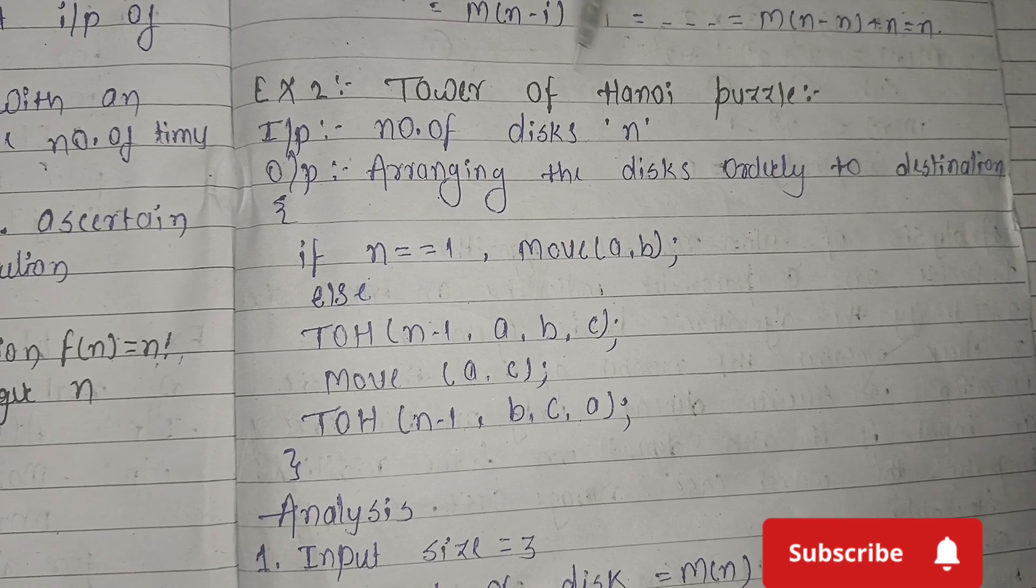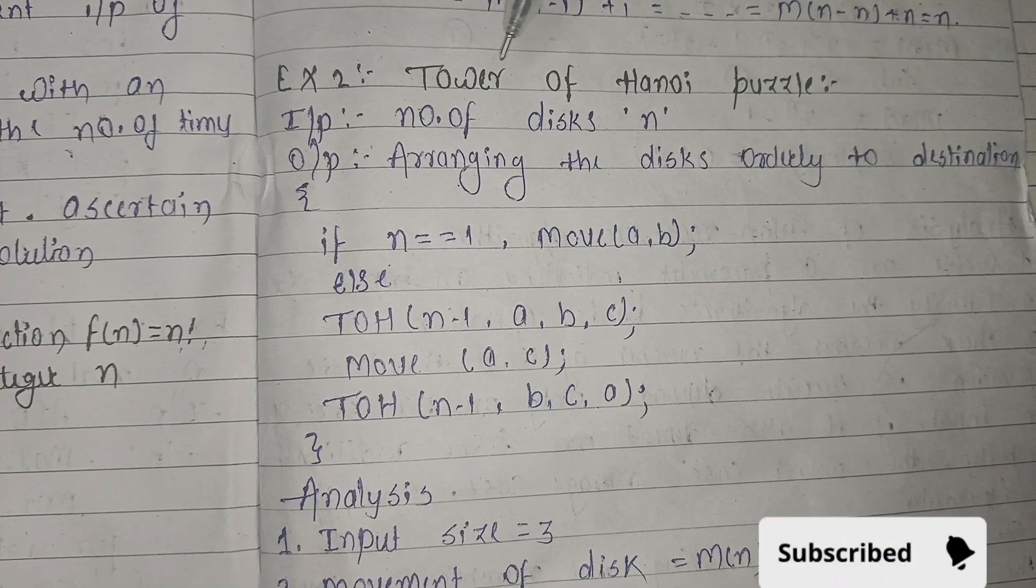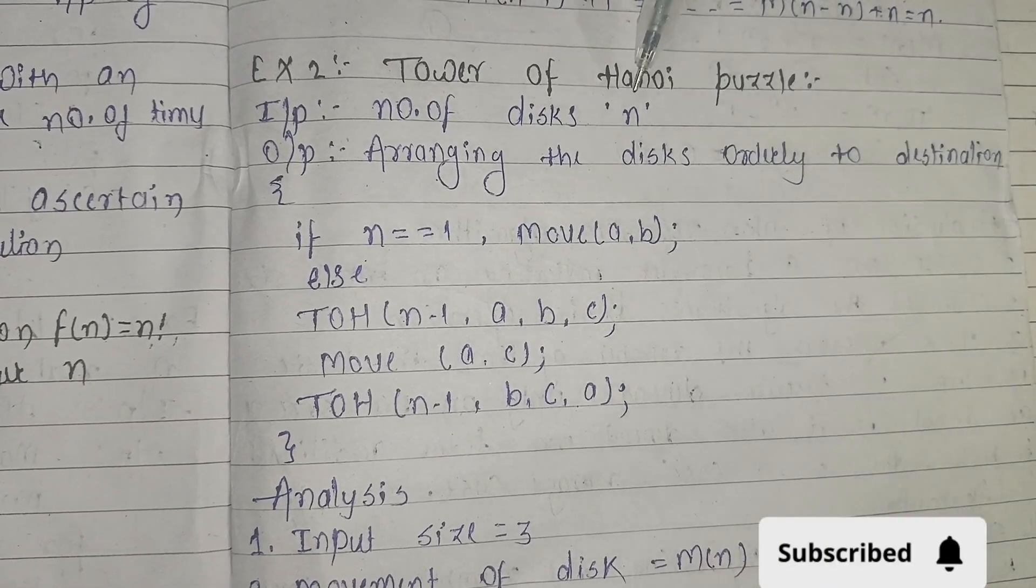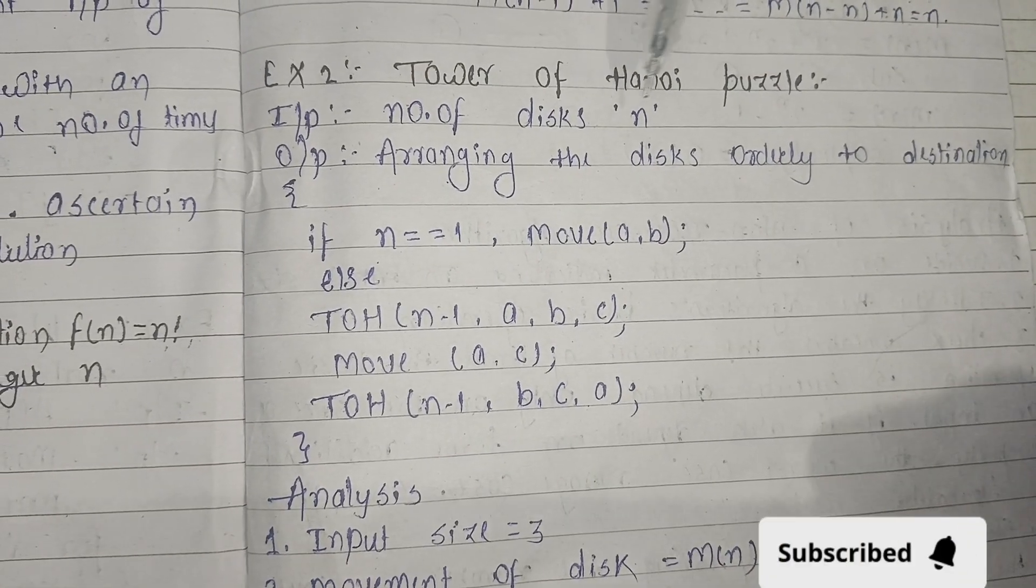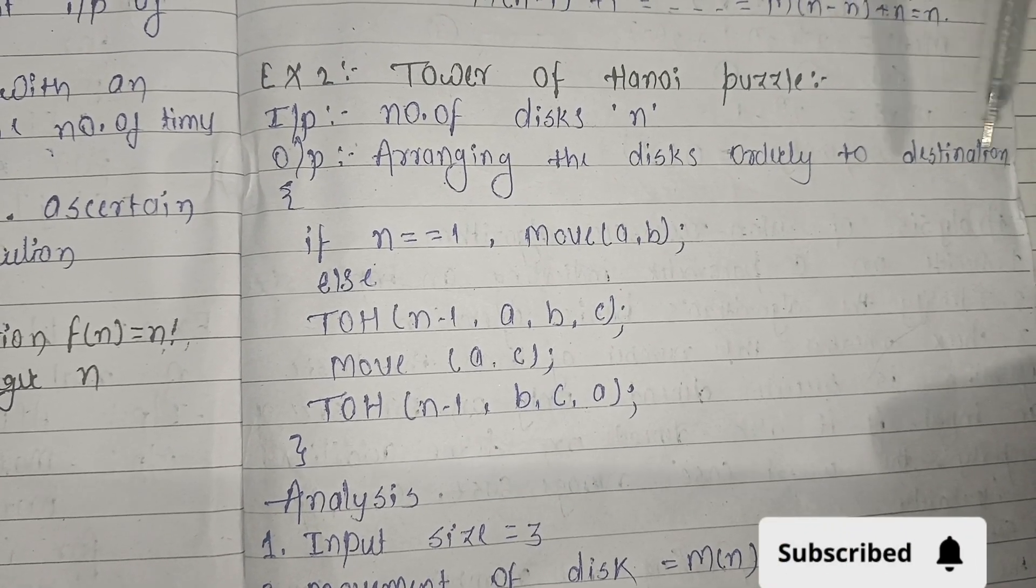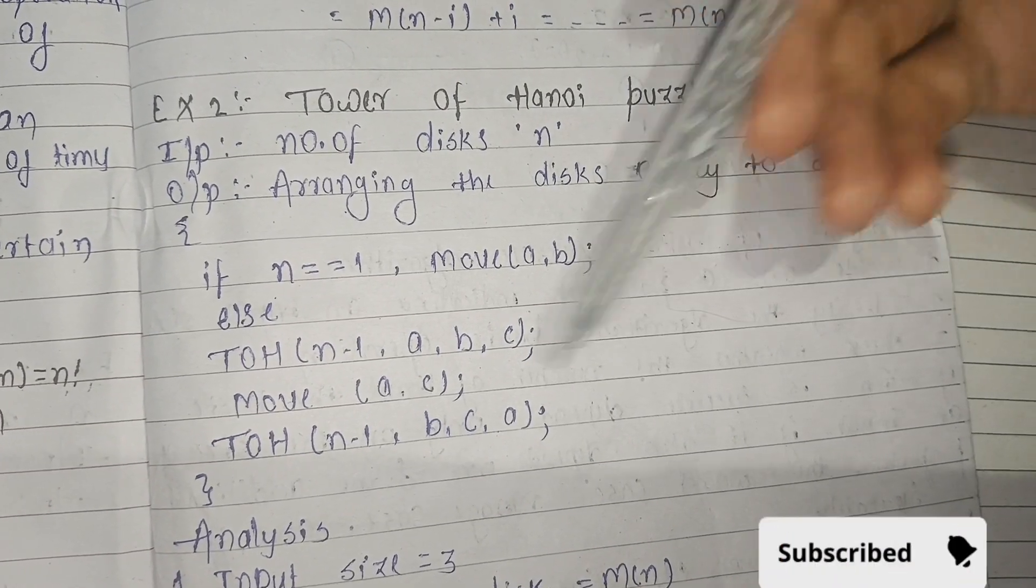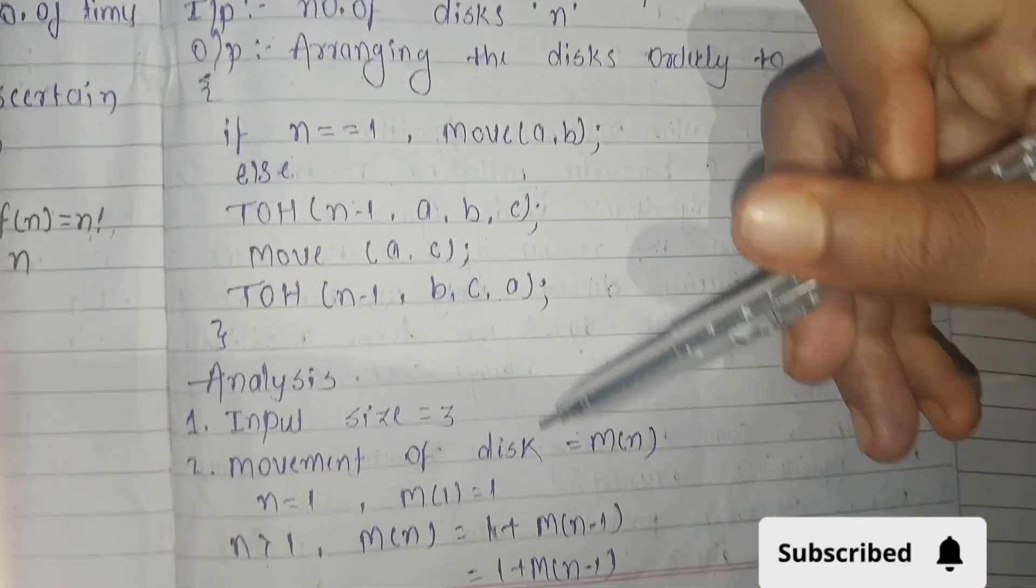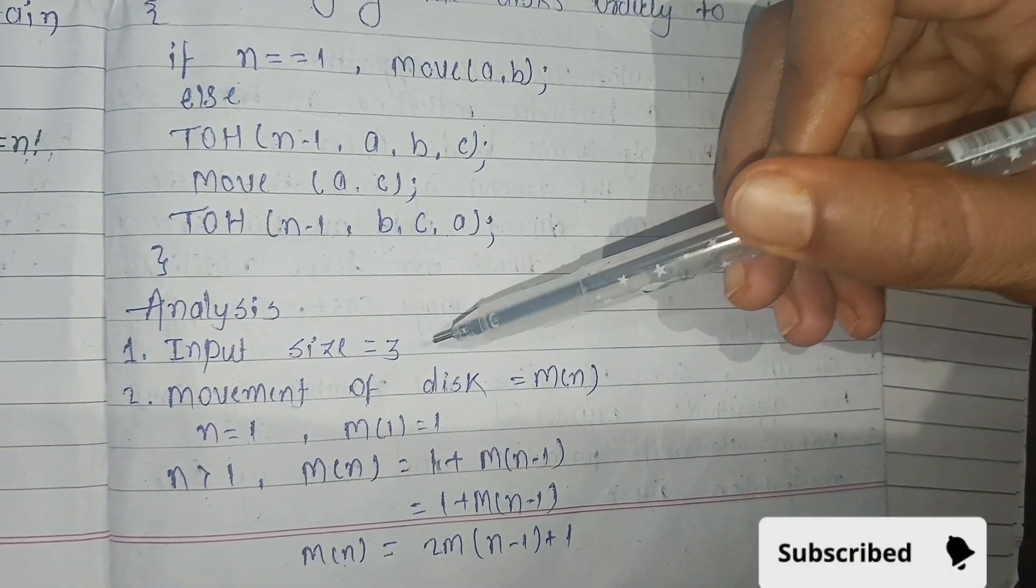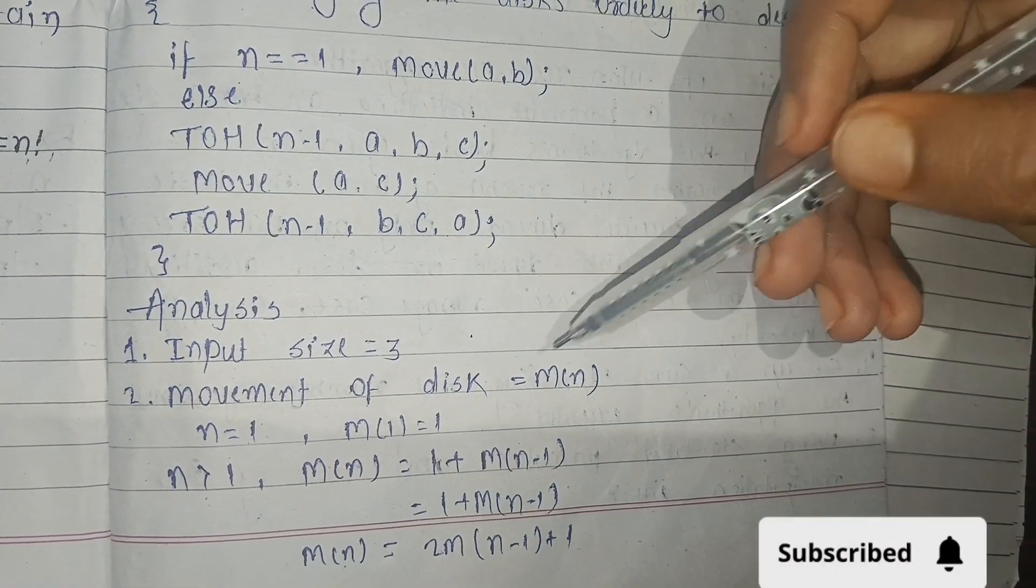Next example is Tower of Hanoi puzzle. This example is very important. Input is number of disks n. Output is arranging the disks orderly to destination. This is the algorithm for Tower of Hanoi.